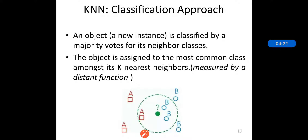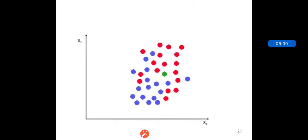In pattern recognition, KNN is responsible for classifying objects based on close training examples. It is a type of instance-based learning or lazy learning where the function is only approximated locally and all computation is done during classification. The function is approximated at the local level, which is why KNN is a very simple classification technique — there is little or no prior knowledge required about the distribution of data.